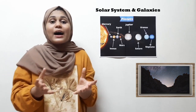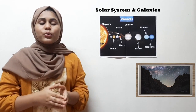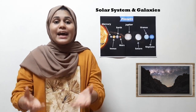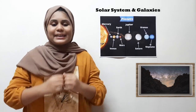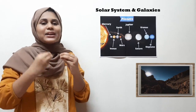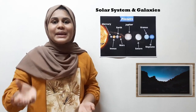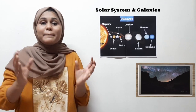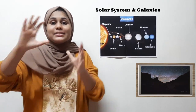How many galaxies are in the universe? We have 125 billion galaxies. Our solar system is in a galaxy called the Milky Way. It is called the Milky Way because it looks like milk spilled on the sky. Ancient Romans called it Via Lactia, which means Milky Way or Milky Road.